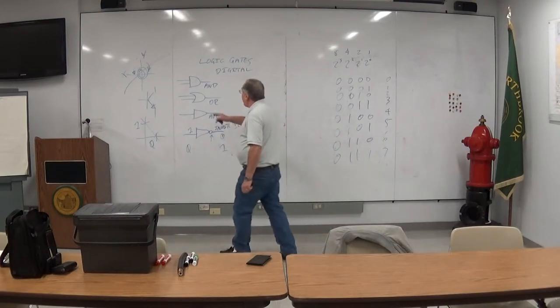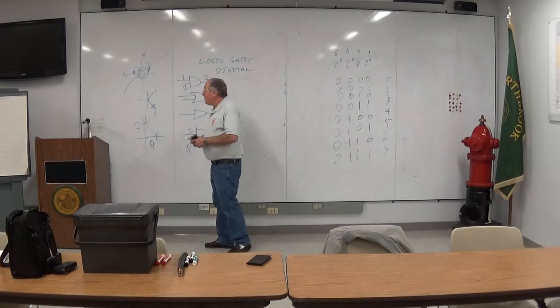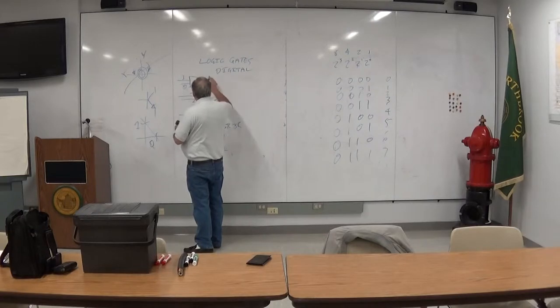Now this guy is called an AND gate because both have to be, both inputs have to be one in order to be a one. If either of the two inputs were a zero, the output would be a zero.